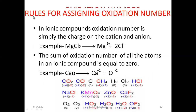Now let us come to the rules for assigning oxidation number. We will study it in two parts: rules for ionic compounds and rules for covalent compounds. In ionic compounds, oxidation number is simply the charge on the cation and anion. For example, in MgCl2, by the crisscross method, we know that Mg has a plus 2 charge and Cl has a minus 1 charge. So the oxidation number of Mg is plus 2 and the oxidation number of Cl is minus 1.